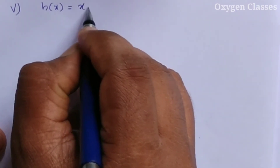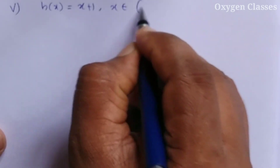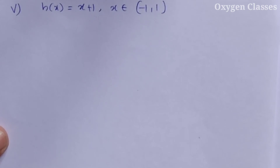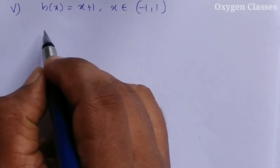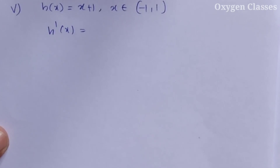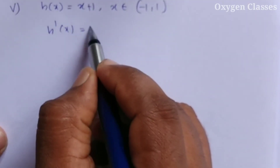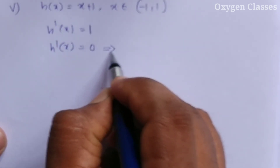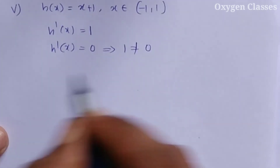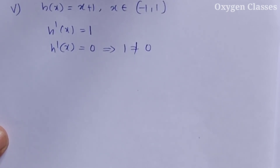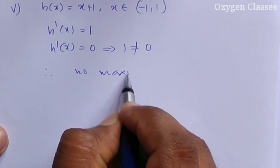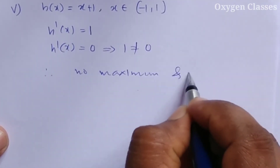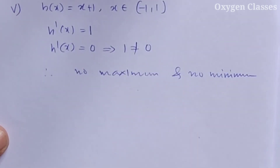For h of x equals x plus 1, where x belongs to the interval minus 1 to 1. Taking the derivative: h dash of x equals 1. Setting h dash of x equal to 0 gives 1 equal to 0, which is a contradiction. Therefore there is no critical point, and hence no maximum and no minimum for this function.